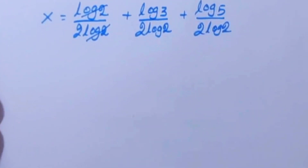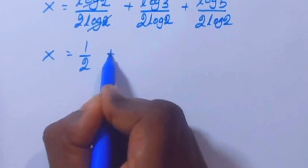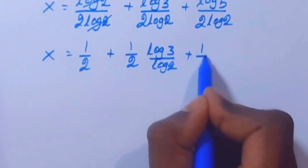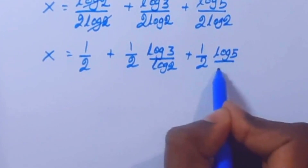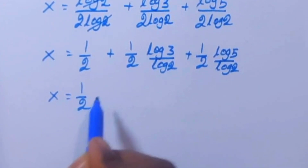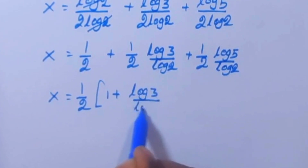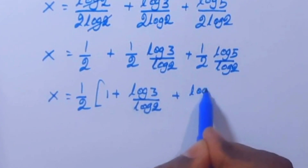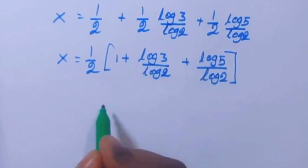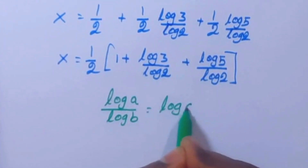So we have x equal to 1 by 2 plus 1 by 2 times log 3 by log 2 plus 1 by 2 times log 5 by log 2. We are going to take 1 by 2 as a common factor: 1 by 2 times open bracket 1 plus log 3 by log 2 plus log 5 by log 2 close bracket. We know the formula log a by log b equal to log a base b.